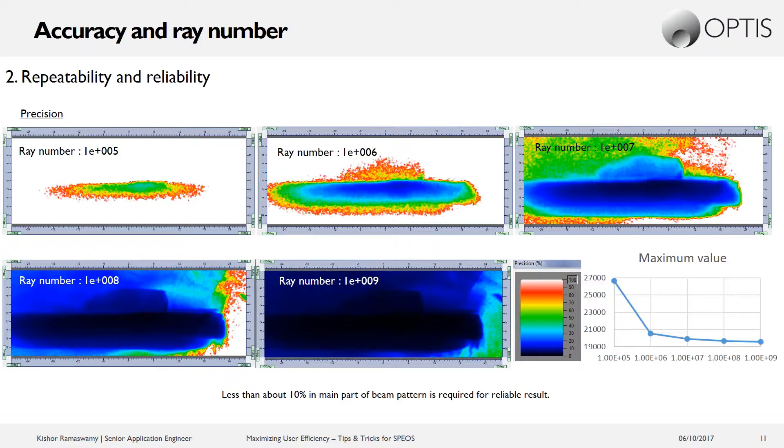And you can see the same trend that we saw in the previous slides as we increased from 100,000 all the way up to 1 billion. You can see the precision getting better and better as we increase this ray count.